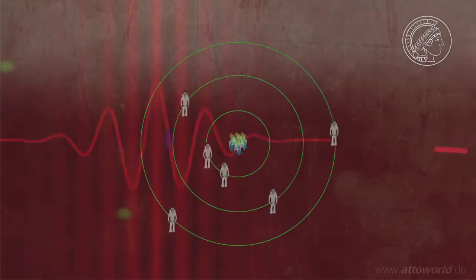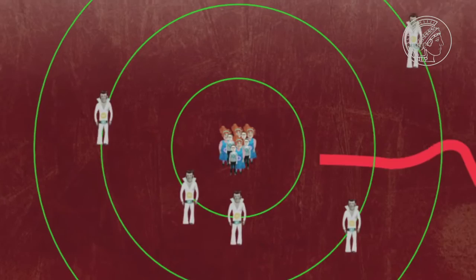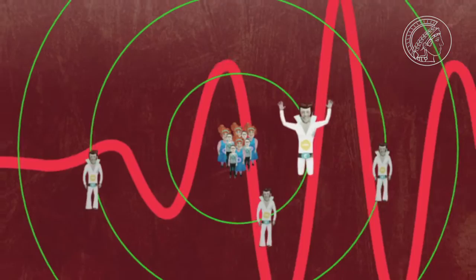Put simply, that means the electrons themselves ensure that it works. An electron is accelerated by the laser light and is briefly catapulted out of the atom. As it falls back in, it emits light again within a period of attoseconds.